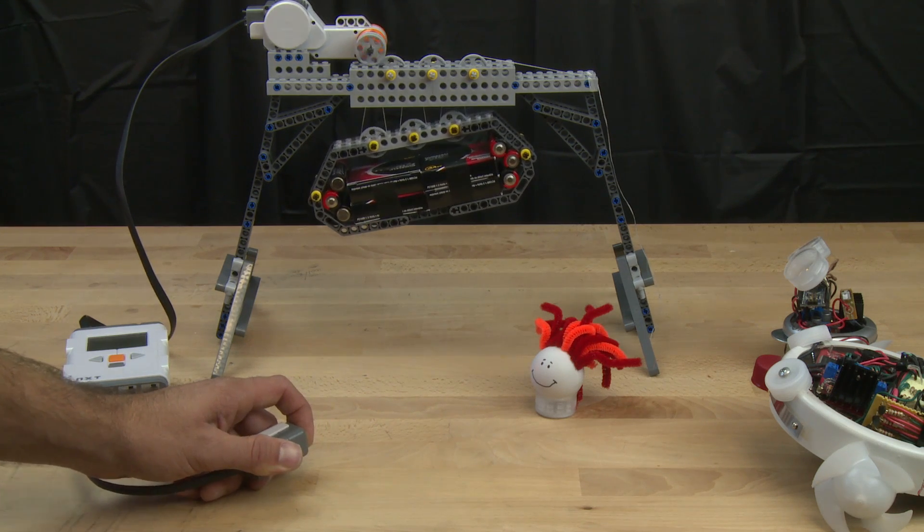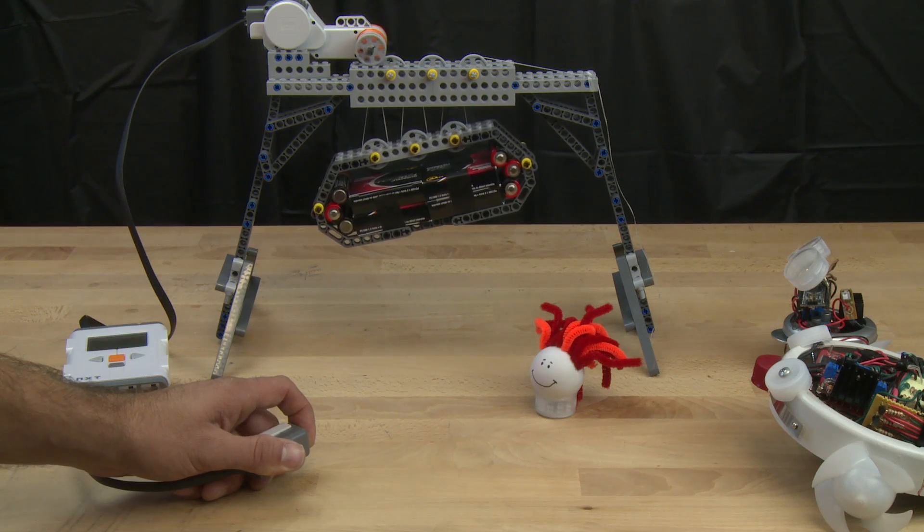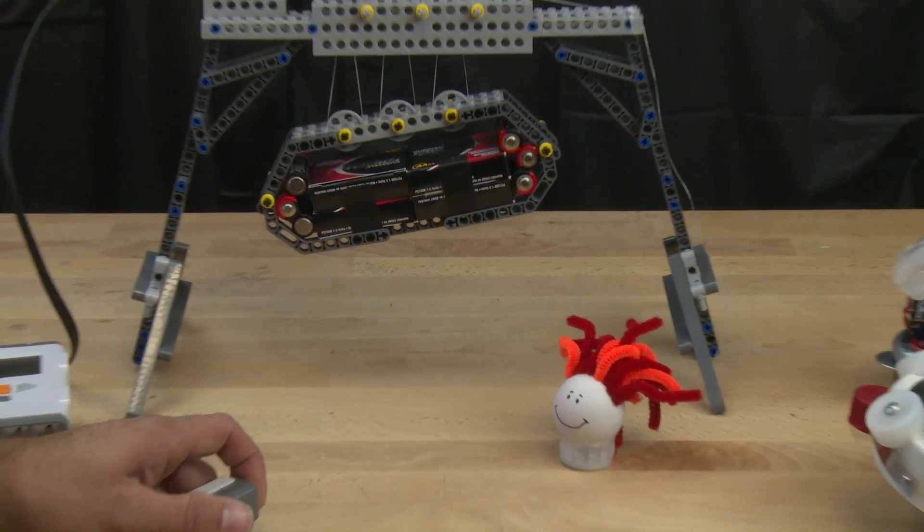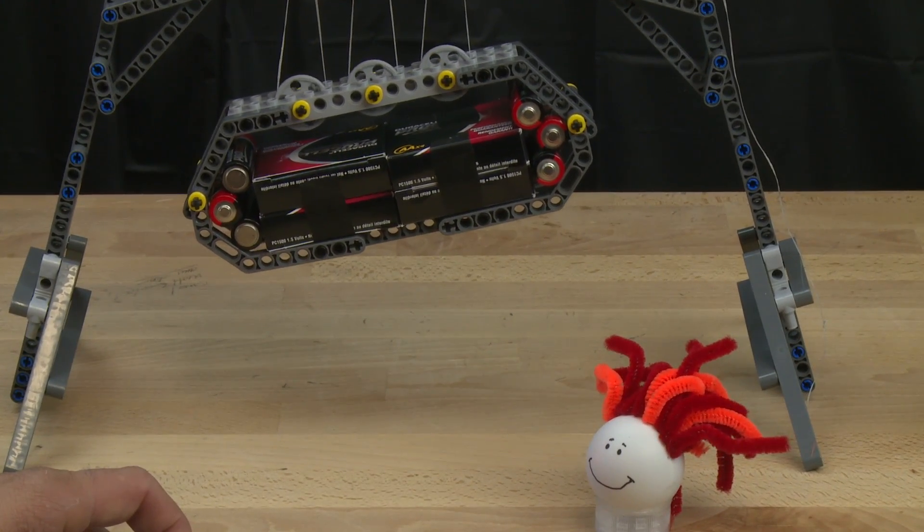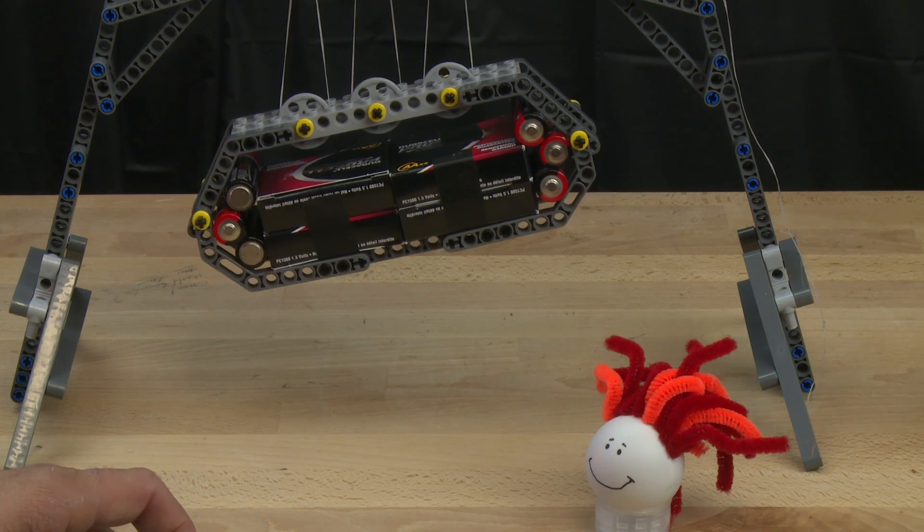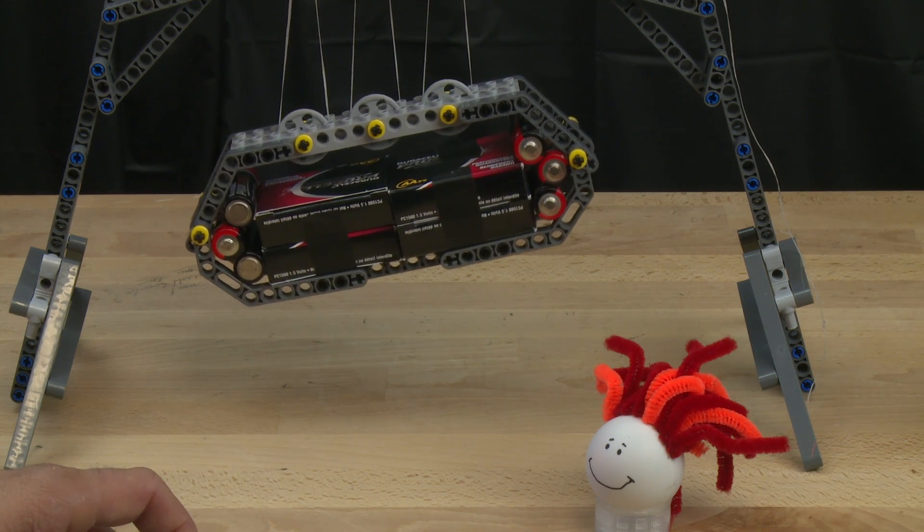You can see as it goes up and down that it's leaning to one side. Any idea why that might be?